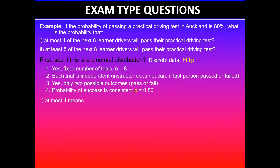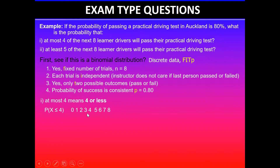The first part says find the probability at most four. The keyword 'at most' means four or less, so we can rewrite that as P(X ≤ 4). We know there are eight learner drivers, so the numbers range between zero and eight. Zero means none of the drivers pass, and the values go up to all eight drivers passing. These are all discrete values, so we cannot have a decimal number of drivers passing. We need the total probability between zero and four.